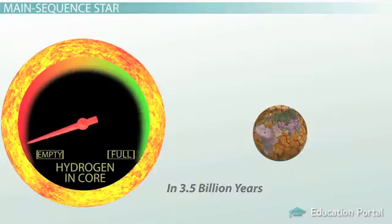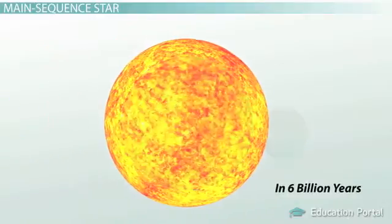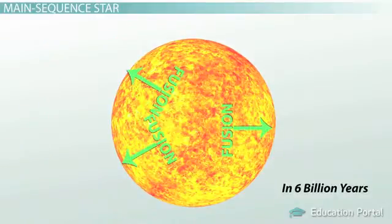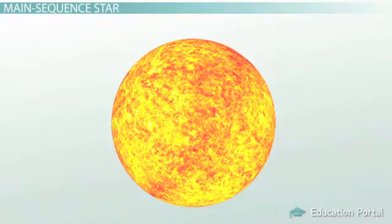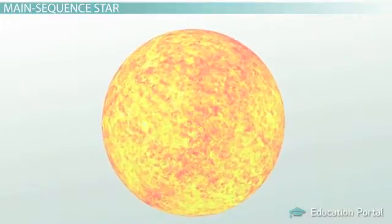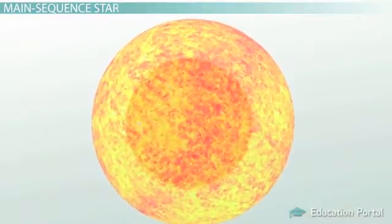In 6 billion years, the sun will run out of fuel. When this happens, there will be no energy pushing the core out, and the pressure of all the layers of the sun will push inward. This causes the core to become unstable and collapse under its own weight, which causes the core to get hotter.